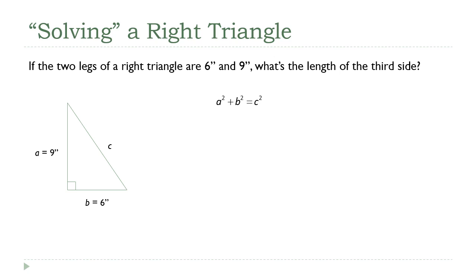I'm going to put our numbers in there — 9 and 6 in for A and B. Now it's a bit of an arithmetic problem. 9 squared is 81, 6 squared is 36, and if we add those together we get C squared equals 117. We've almost found the value of C — all we have to do is take the square root of both sides, and we get C equals the square root of 117.